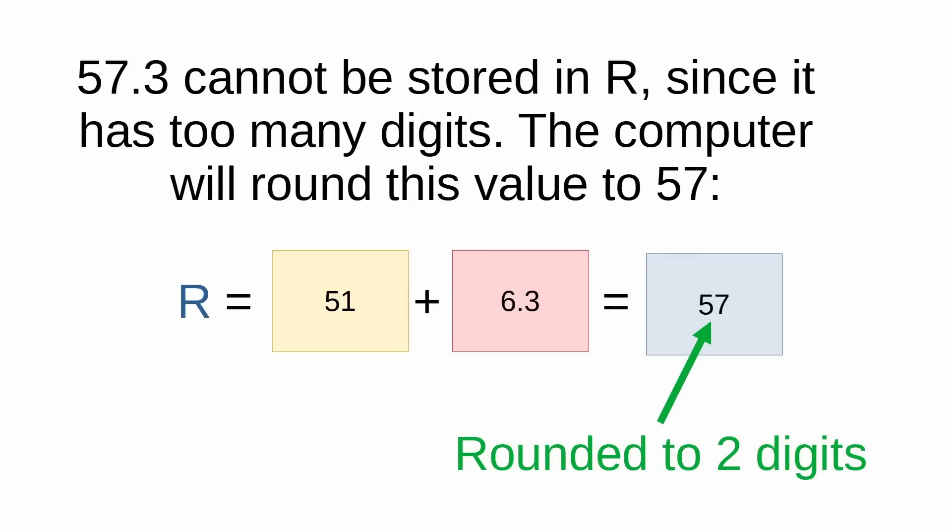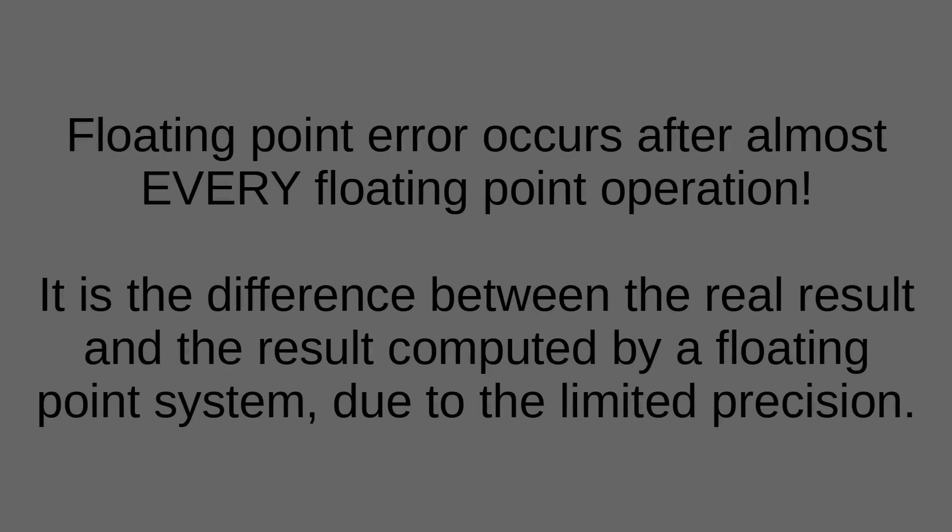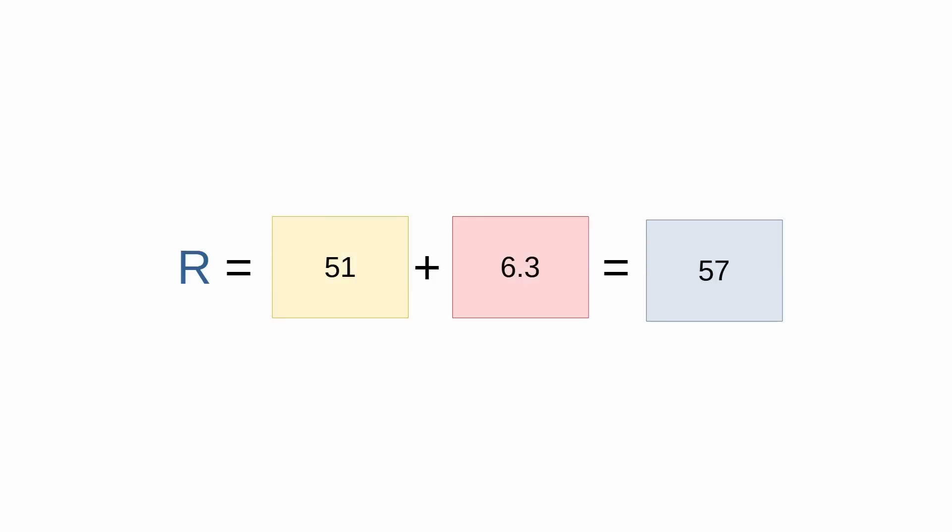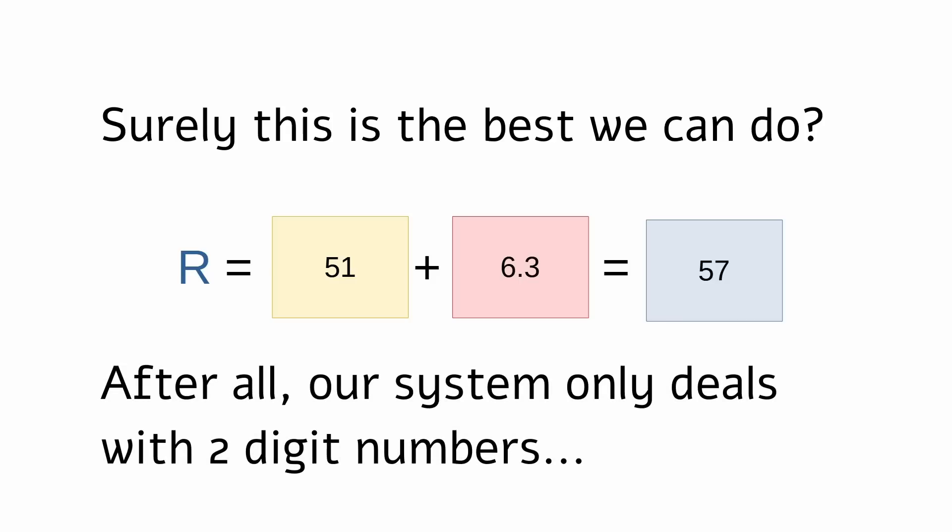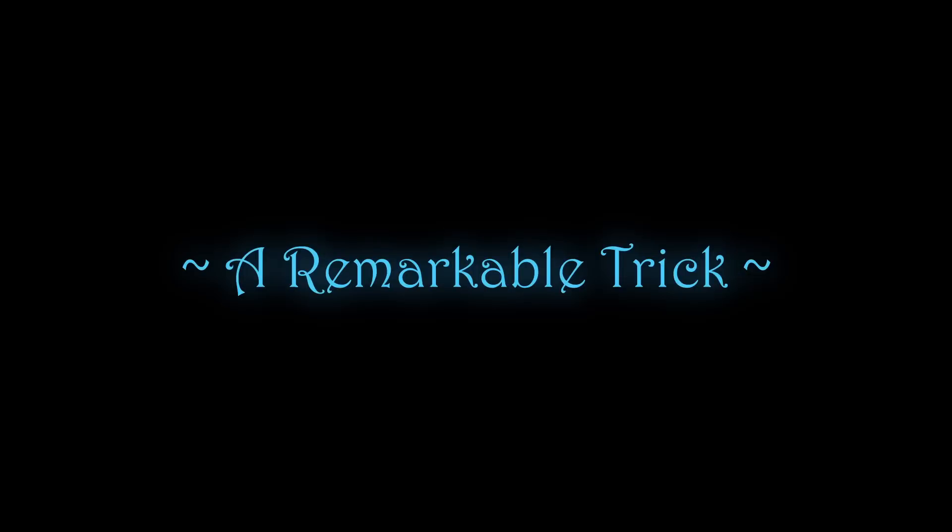And our little system can't store three-digit numbers, so it's going to have to round. What it's going to store is R equals 57. And that little 0.3 on the end is rounded away and lost. And what we have here is called floating-point error. This happens in real floating-point pretty much all the time as well. Now, it would seem that 57 is pretty much as good as we can do. How could we possibly get any better?